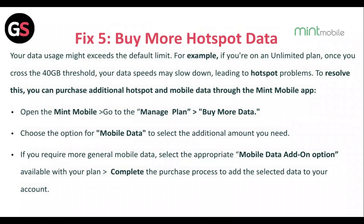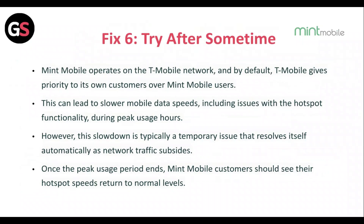Fix 6: Try after some time. Mint Mobile operates on the T-Mobile network, and by default T-Mobile gives priority to its own customers over Mint Mobile users. This can lead to slower mobile data speeds, including issues with hotspot functionality during peak hour usage. However, this slowdown is typically a temporary issue that resolves itself automatically as network traffic subsides. Once the peak usage period ends, Mint Mobile customers should see their hotspot speed return to normal levels.